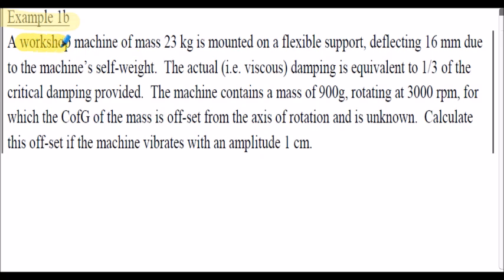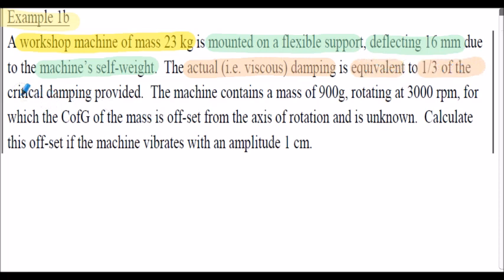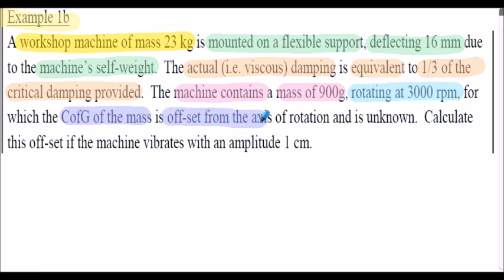Example 1b. A workshop machine of mass 23 kilograms is mounted on a flexible support that deflects 16 millimetres due to the machine's self-weight. The actual viscous damping is equivalent to one third of the critical damping provided. The machine contains a mass of 900 grams, rotating at 3000 rpm, for which the centre of gravity of the mass is offset from the axis of rotation, and this offset is unknown. We're asked to calculate the offset if the machine vibrates with an amplitude of one centimetre. If you think you can solve this problem without further assistance, I'd encourage you to stop the presentation and do so, but I will outline the full worked solution on the following slides.